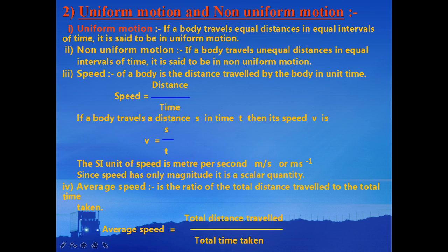Average speed is the ratio of the total distance travelled to the total time taken. So average speed equals total distance divided by the total time taken for the trip.